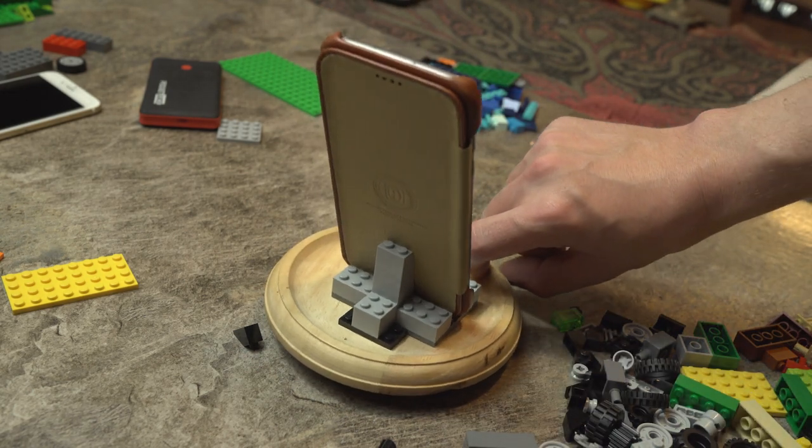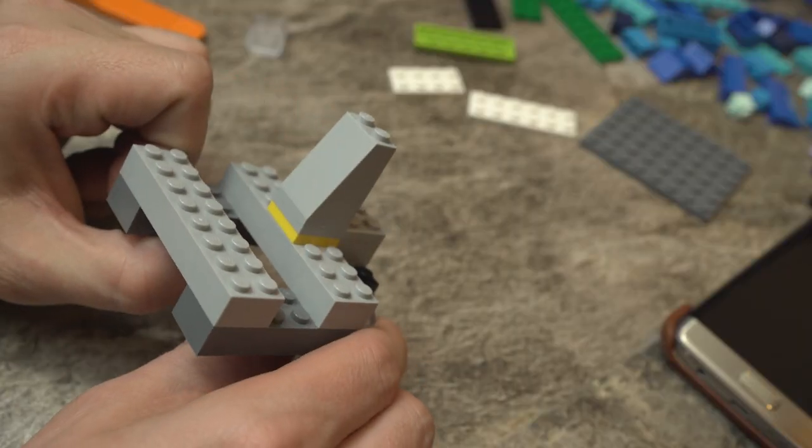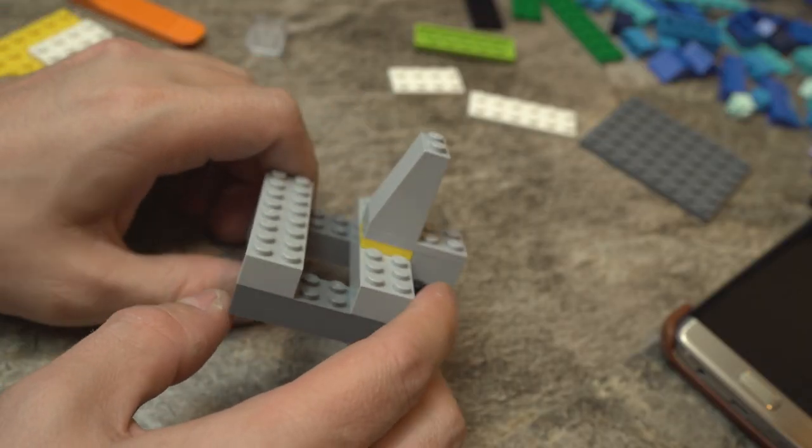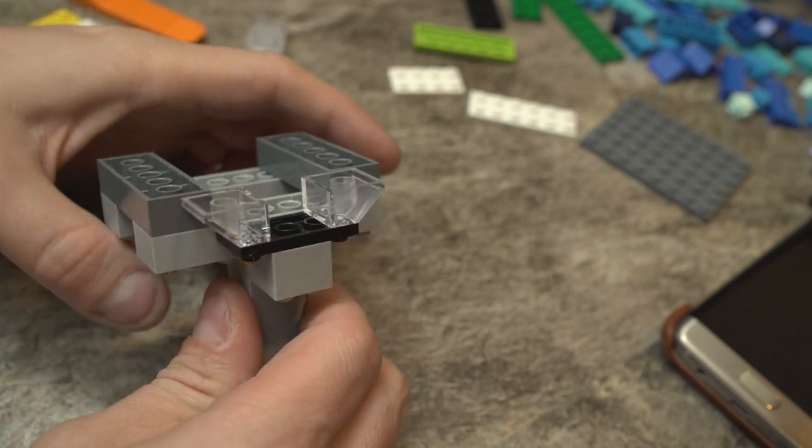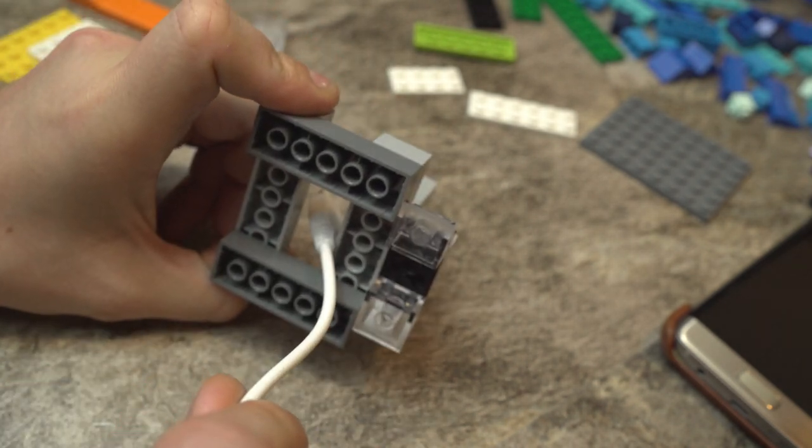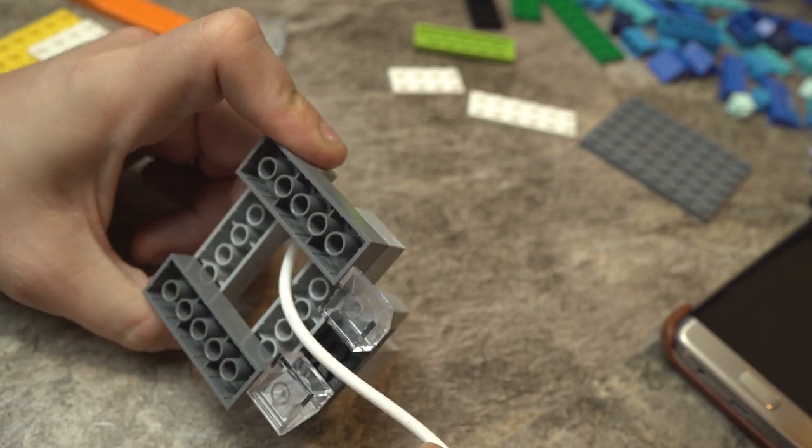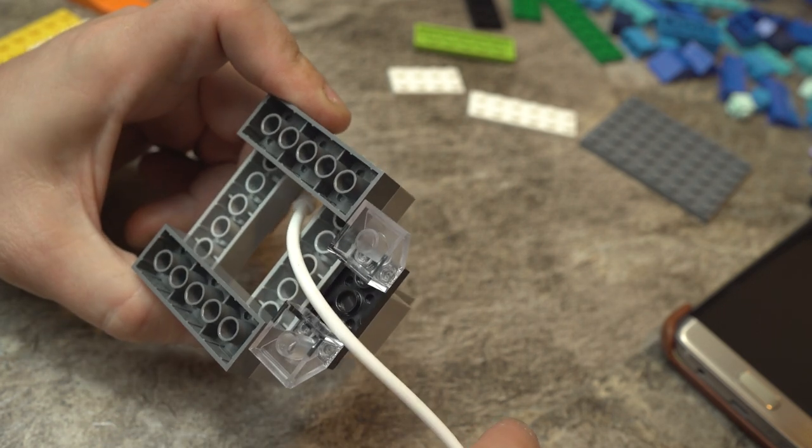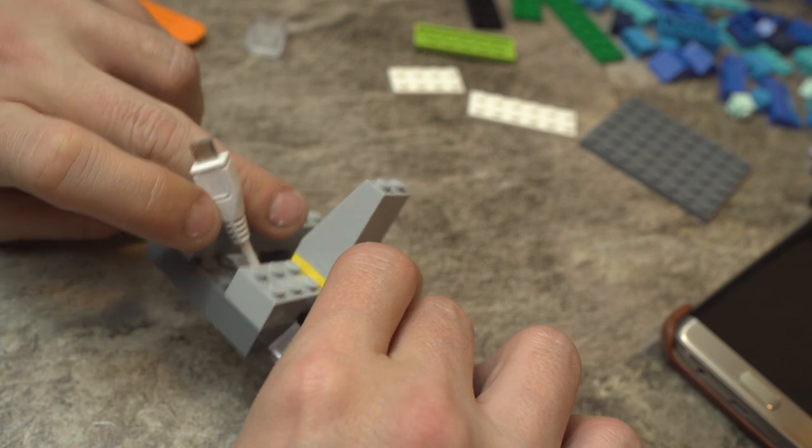But what about a charging holder or a dock? The stand can easily be adapted into a dock by removing the base plate and replacing it with two long bricks to support the phone holder. The gaps created by lifting the blocks up should allow you to easily slide a cord in and let your phone charge while it's sitting in the dock. It's not that pretty, but it's certainly effective.